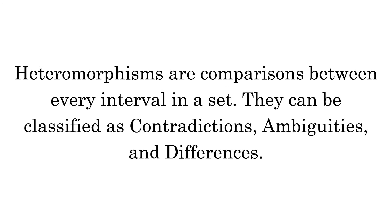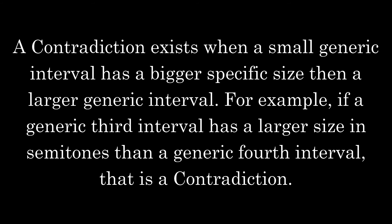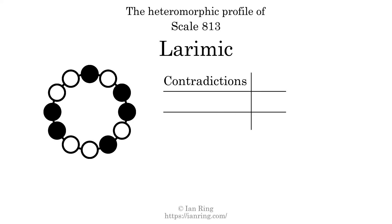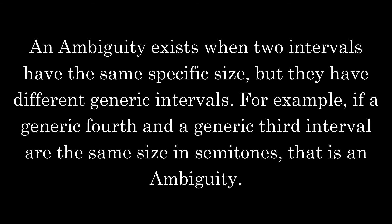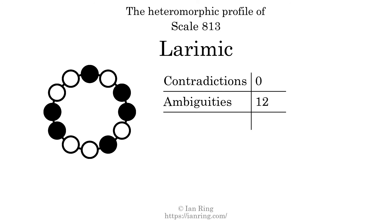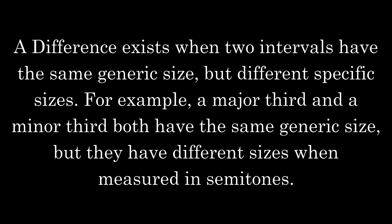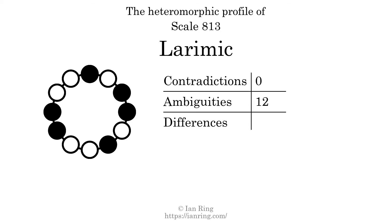Heteromorphisms are comparisons between every interval in a set. They can be classified as contradictions, ambiguities, and differences. A contradiction exists when a small generic interval has a bigger specific size than a larger generic interval — for example, if a generic 3rd interval has a larger size in semitones than a generic 4th interval. The number of contradictions in this scale is 0. An ambiguity exists when 2 intervals have the same specific size but different generic intervals. The number of ambiguities is 12. A difference exists when 2 intervals have the same generic size but different specific sizes, such as a major 3rd versus a minor 3rd. The number of differences in this scale is 57.